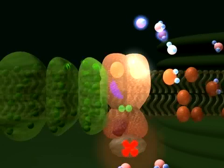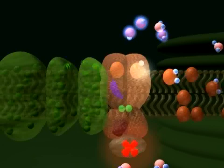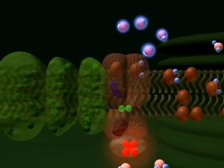The doubly reduced Qb once again accepts hydrogen ions from water molecules, leaving hydroxyl ions in the stroma, and diffuses to join the plastiquinone pool.